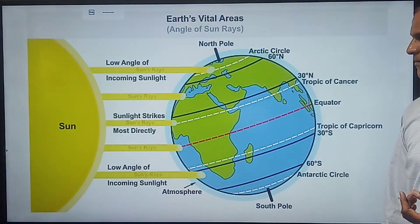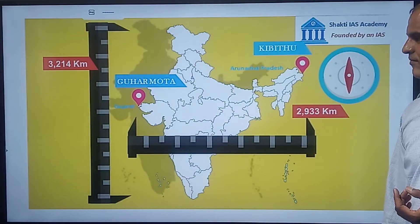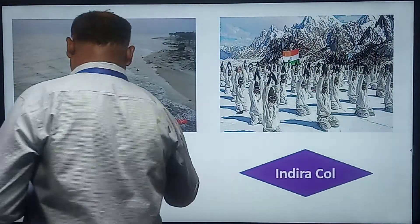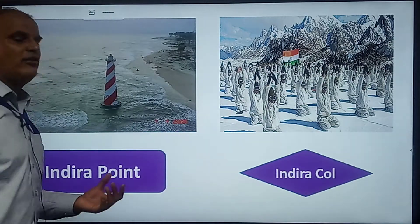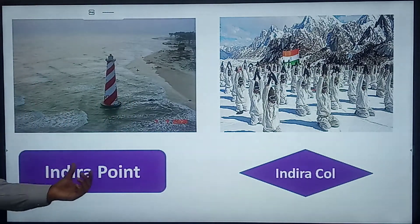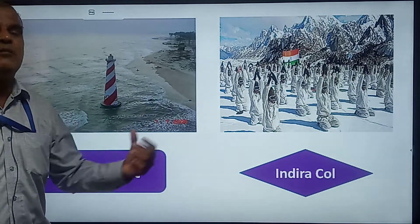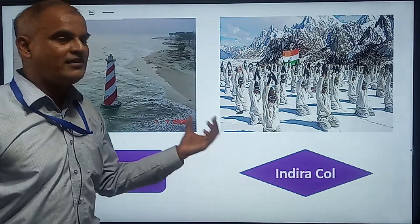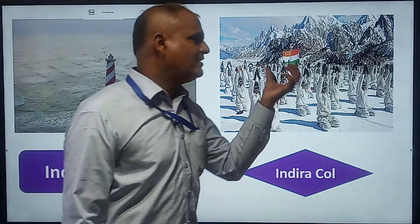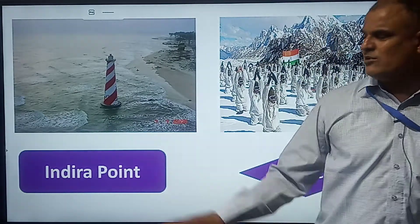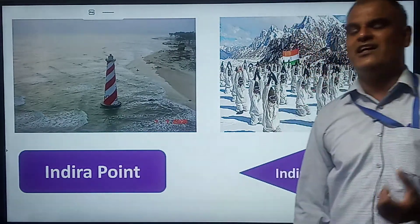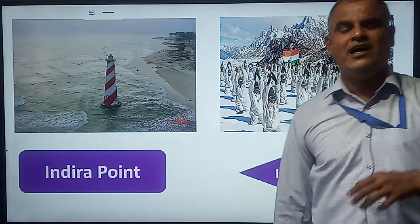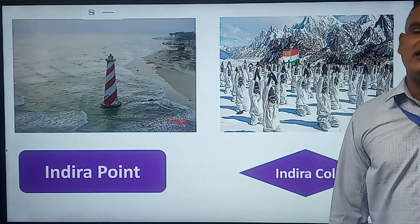These are the extreme points of India. The southernmost point is called Indra Point, and the northernmost point is called Indra Col, located at Siachen. When the 2004 tsunami hit, Indra Point was destroyed and submerged in the ocean.